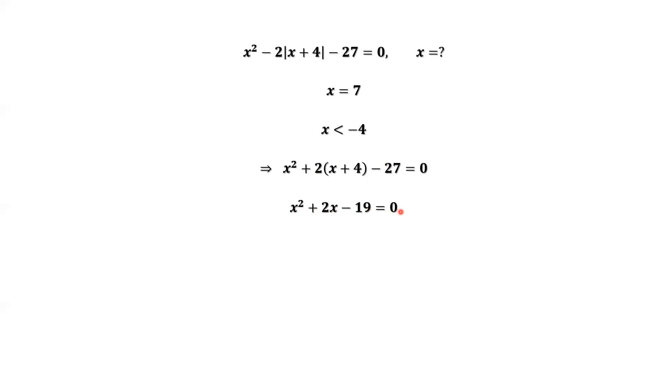We can use the quadratic formula to solve this quadratic equation. x equals 2 times 1, negative, b is 2, plus minus b squared, minus 4 times a times c, c is negative 19. Here should be plus. Continue to simplify.